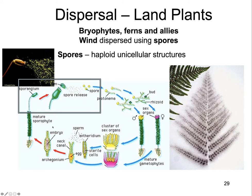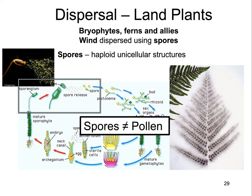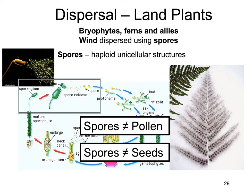In the moss life cycle, a sporangium grows out the top of the typical moss plant; a little capsule opens up and spores get released. These haploid unicellular structures disperse to a new place, and if they land in the right habitat, they sprout and grow into mature gametophyte plants. Key distinctions: spores are not pollen — pollen is multicellular and produces sperm, whereas spores are unicellular and do not directly produce sperm. Spores are also different from seeds, because seeds are multicellular and typically diploid or even triploid.